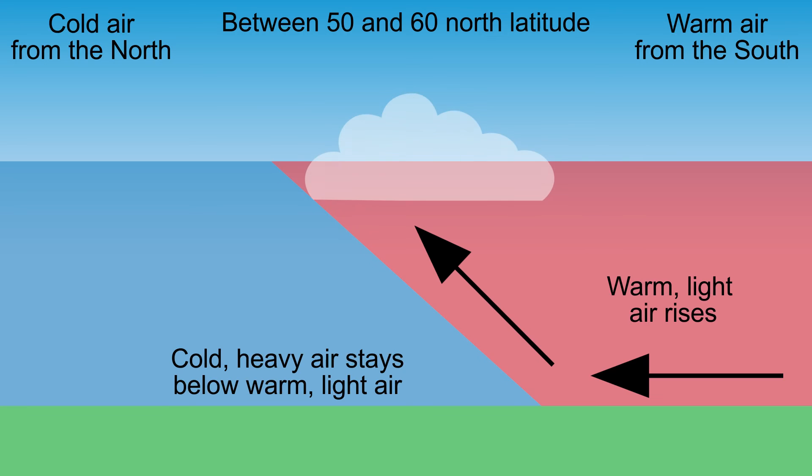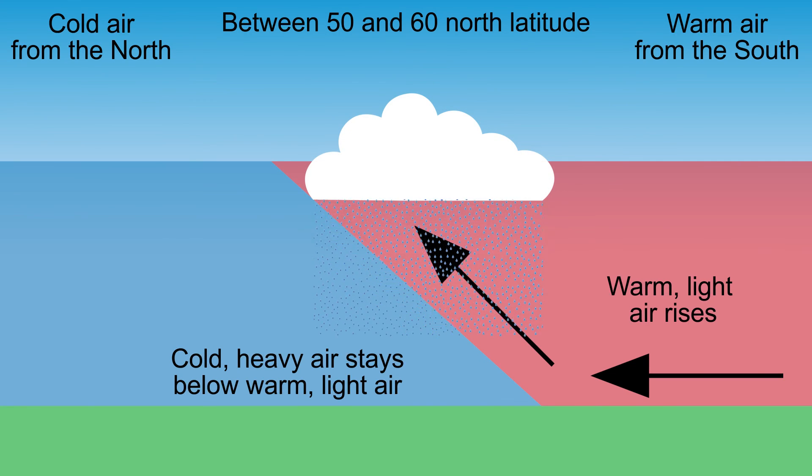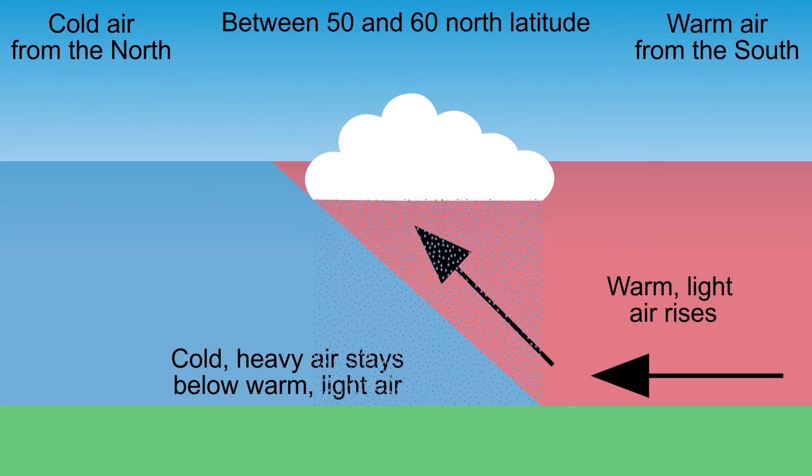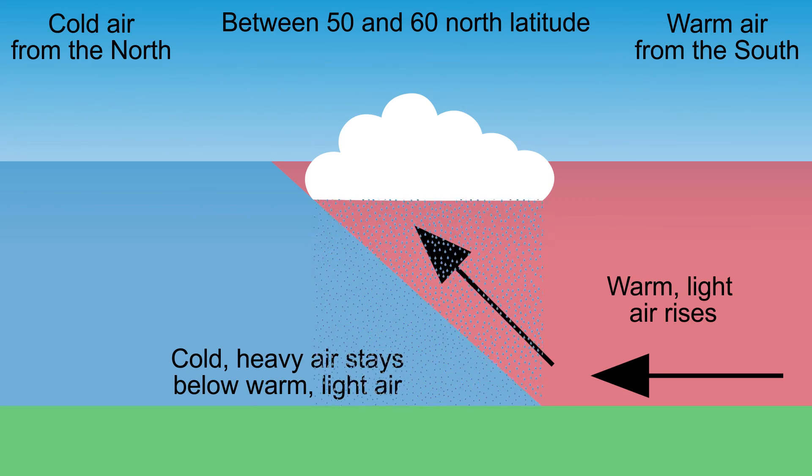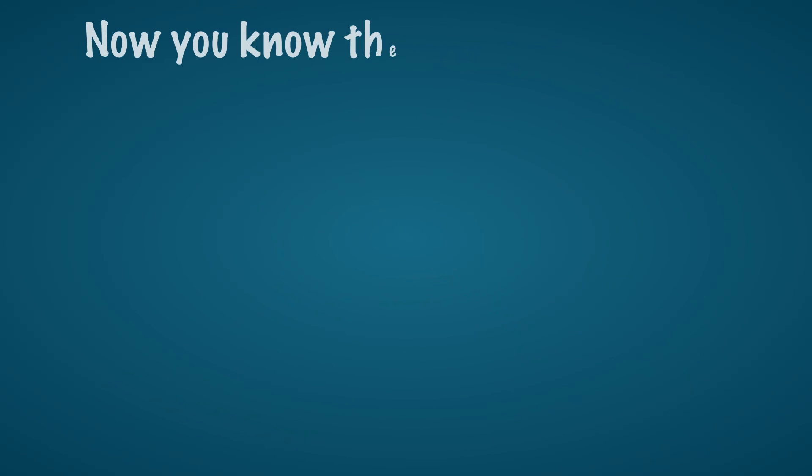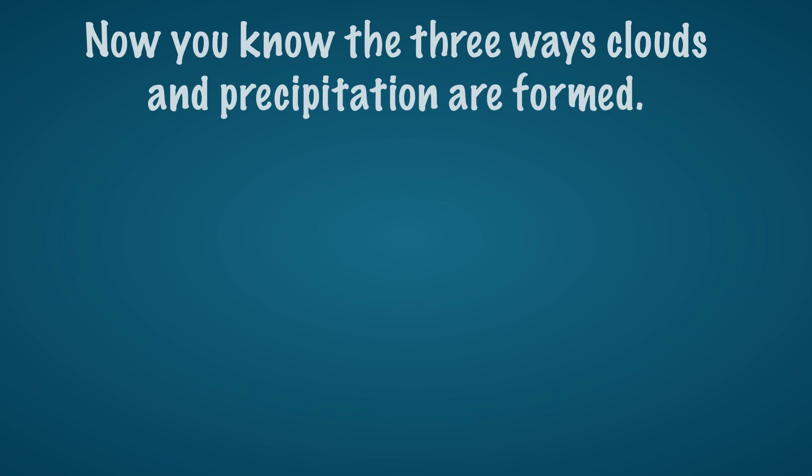This cools the air, condenses the water vapor and creates clouds and eventually precipitation. Especially clouds at higher latitudes are formed in this way. Now you know the three ways clouds and precipitation are formed.